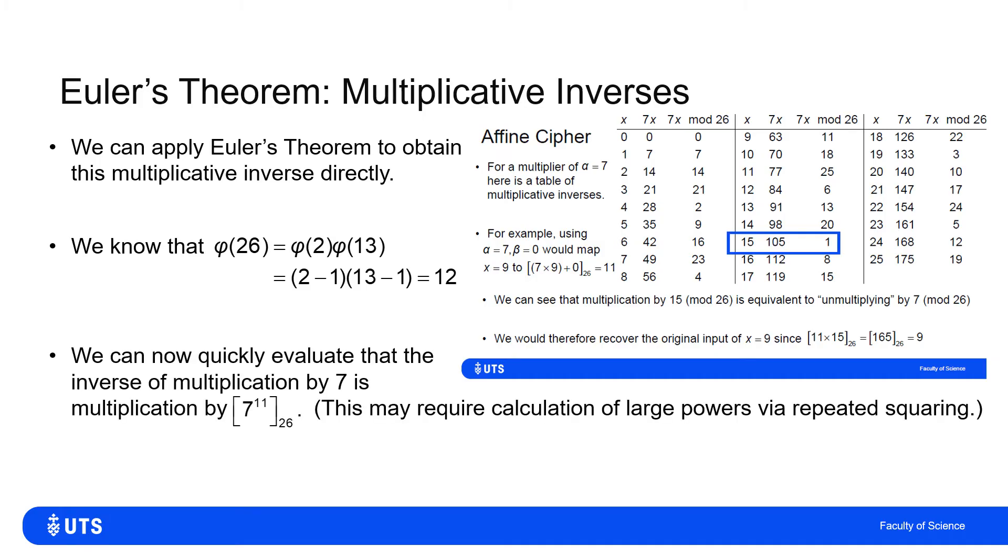So what that would tell me is that 7 to the power of 12 minus 1, or 7 to the 11th power, mod 26, would give me the multiplicative inverse of 7 in this mod 26 arithmetic.